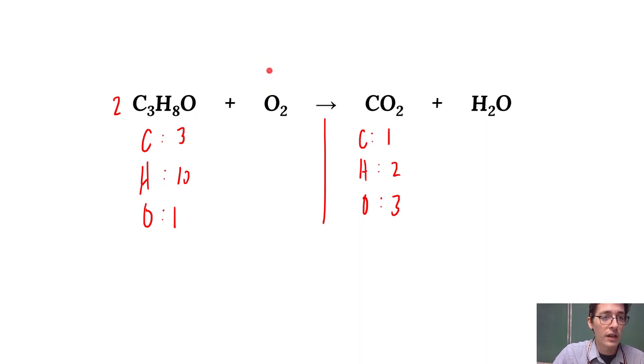Remember, combustions all have oxygen in them. You're going to see O2 as a reactant. So we're going to double this and that gives me six carbons. Two times eight is 16 hydrogens and then I've got two times one plus two is four oxygens now.